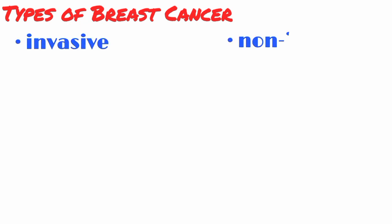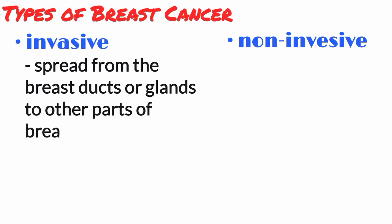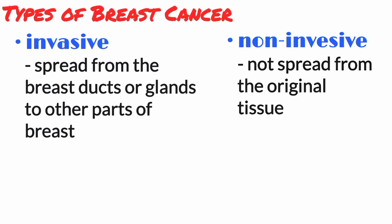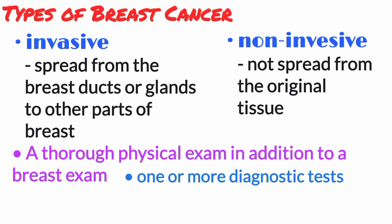Let's discuss types of breast cancer. There are several types of breast cancer, and they are broken into two main categories: invasive and non-invasive. Invasive cancer has spread from the breast ducts or glands to other parts of the breast, while non-invasive cancer has not spread from the original tissue. To determine if your symptoms are caused by breast cancer or a benign breast condition, your doctors will do a thorough physical exam in addition to a breast exam.